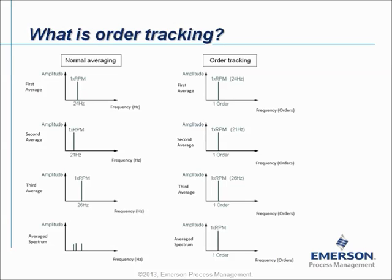To overcome that, if you also have a speed pulse — a tach pulse — you can do order tracking. During data collection, the horizontal axis units are converted into orders. So the 24 Hz is expressed as one order, the 21 Hz is expressed as one order, and the 26 Hz is expressed as one order. If you now do averaging based on order, you have a spectrum stored that is meaningful. We will now take a look at how to do that on the CSI 2140 Machinery Health Analyzer.